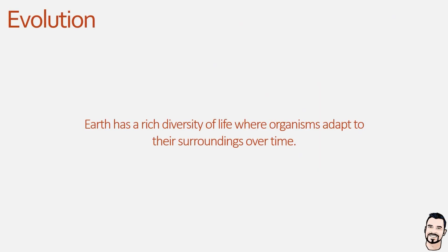Now evolution is a biological process by which living organisms change and adapt to their surroundings over time, and because the earth has a vast range of different habitats, evolution has led to the rich diversity of life we see today. But what evidence is there to actually support this theory?